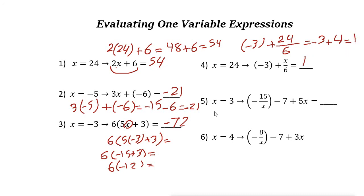Next one, x is 3. So negative 15 over 3 minus 7 plus, again we have x here. So plus 5 times 3. Negative 15 divided by 3 is negative 5. Minus 7, then plus 15. So negative 5 minus 7 is negative 12. Plus 15 is 3.